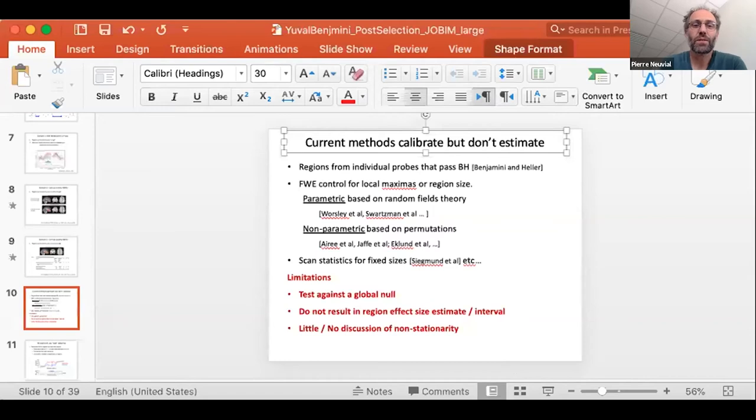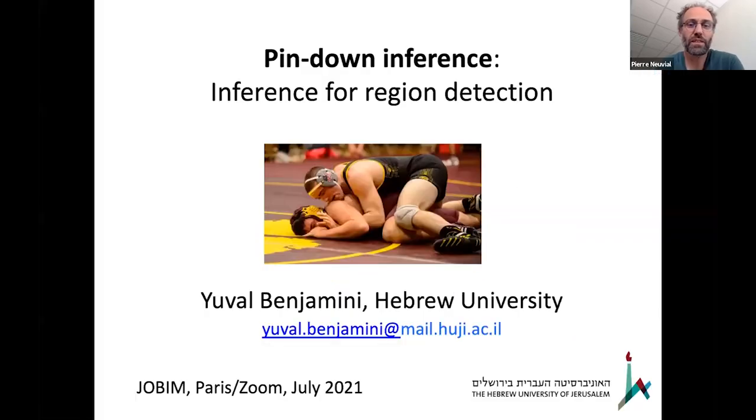I will start sharing then. So Yuval Benjamini is not the Benjamini of the false discovery rate, sorry Yuval for introducing you like this, but he's also working on high throughput genomic data and especially on selective inference. Yuval is an assistant professor in Jerusalem at the Hebrew University.